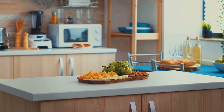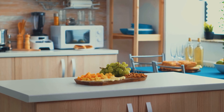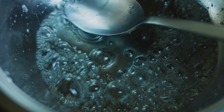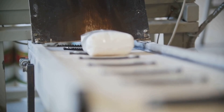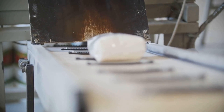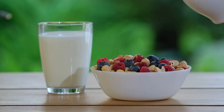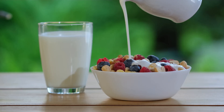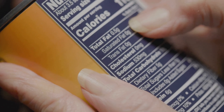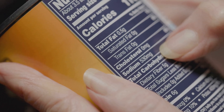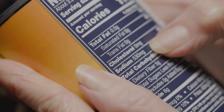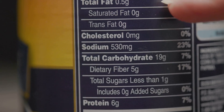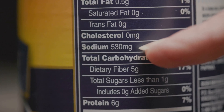This video explains what added sugars are and the different names used for them. Simply put, these are sugars added to foods during different stages of processing to enhance flavor, texture, or shelf life. While naturally occurring sugars in fruits and dairy are fine in moderation, added sugars can sneak into foods in unexpected ways. The general recommendation is to limit your sugar intake to 25 to 50 grams a day, or about 5 to 10% of your daily calories — that's just a few teaspoons. But sticking to this guideline can be tough when sugar is hidden under so many names.